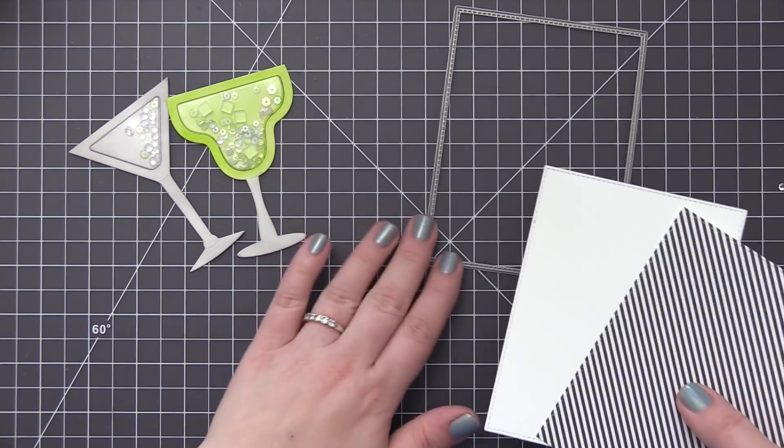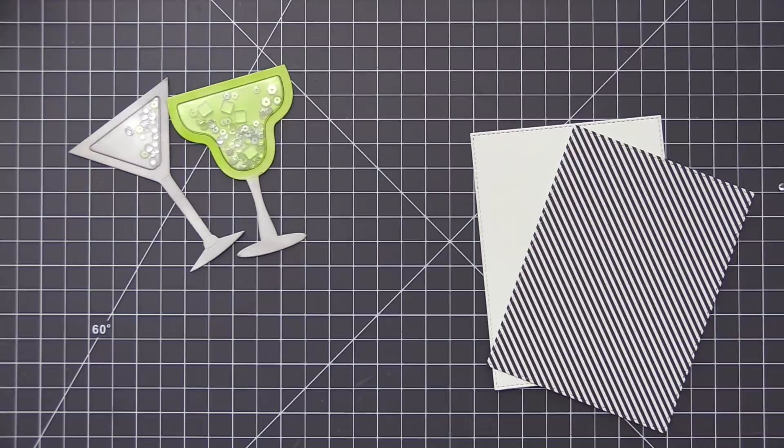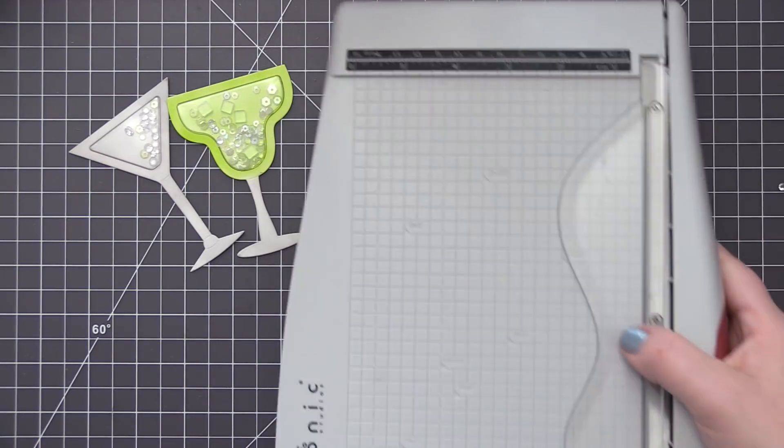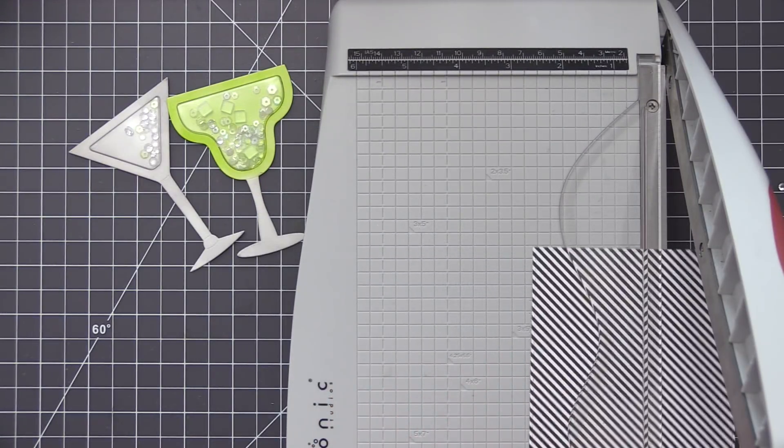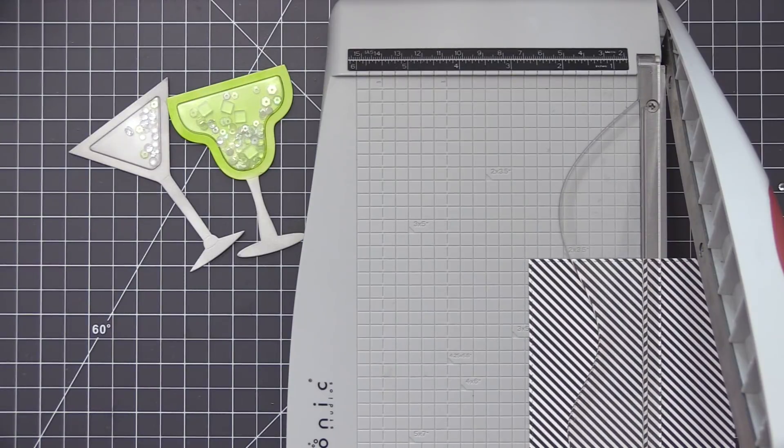So I have two panels here that I have die cut with a stitch rectangle die. I have a piece of white cardstock as well as a black and white stripe pattern paper piece. And this one here I'm going to trim down so I just have a strip of it.